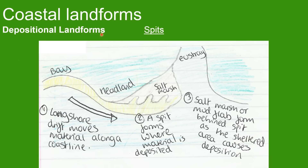Another depositional landform is a spit. Longshore drift moves material across a coastline, and this material reaches a headland. Instead of continuing around, the estuary has a force which stops deposition from moving all the way across. Salt marshes form behind the spit, as this is the sheltered area behind the deposition.